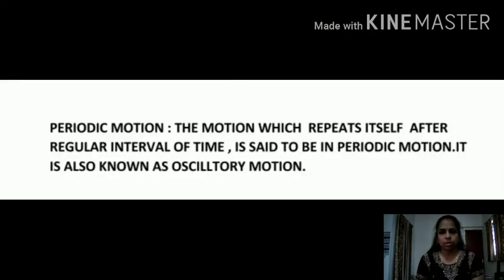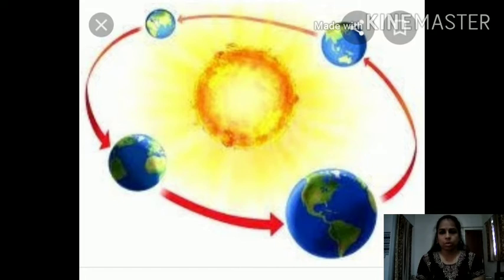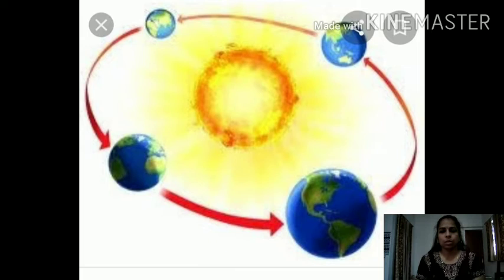The motion which repeats itself after a regular interval of time is said to be in periodic motion. This is also known as oscillatory motion. Examples include: the motion of a child on a swing, swinging of a pendulum, and the revolution of Earth around the Sun, as it repeats its motion after a regular interval of time. Among all these, the simplest type of motion is rectilinear motion.